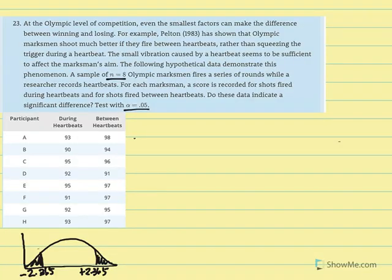All right, so I've drawn a graph and identified our critical t and shaded in the critical region. Next, we're going to calculate our average difference. So our mean difference is equal to the sum of d over n.